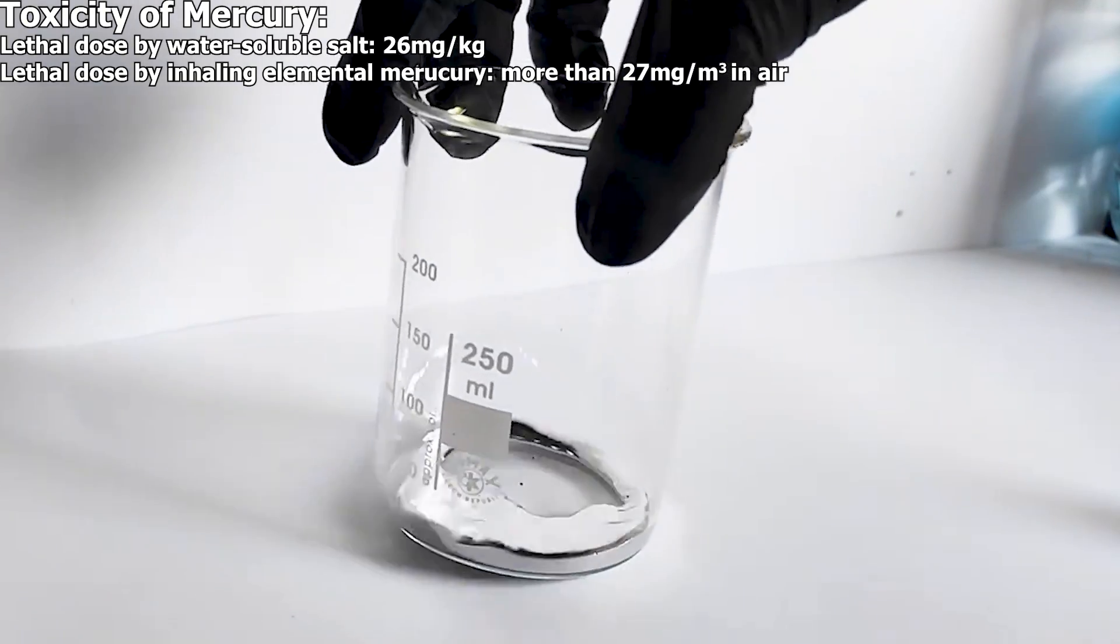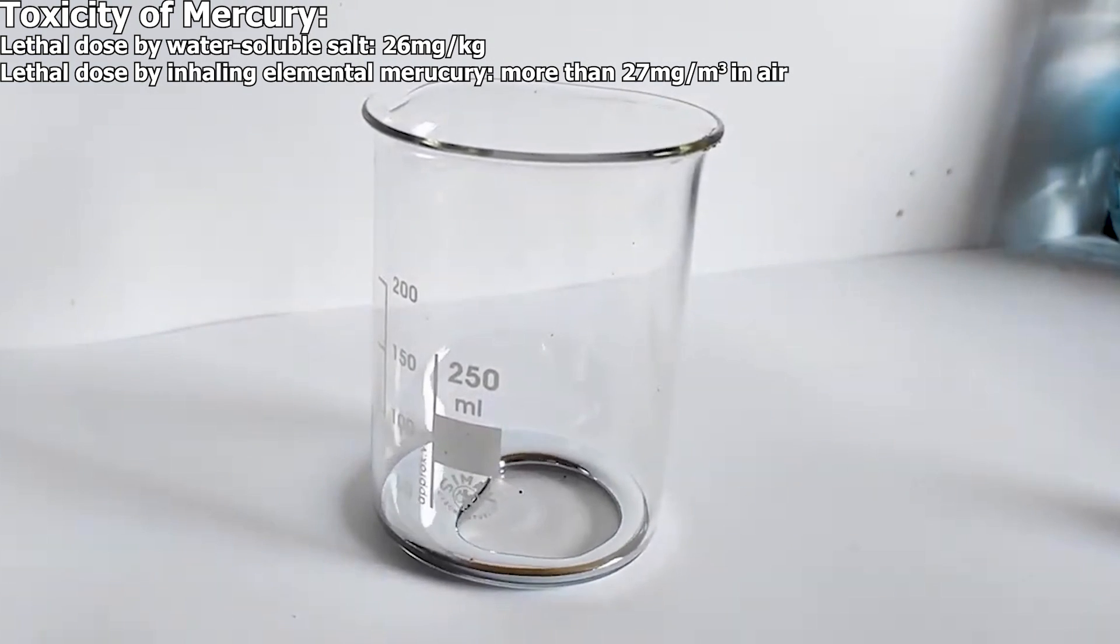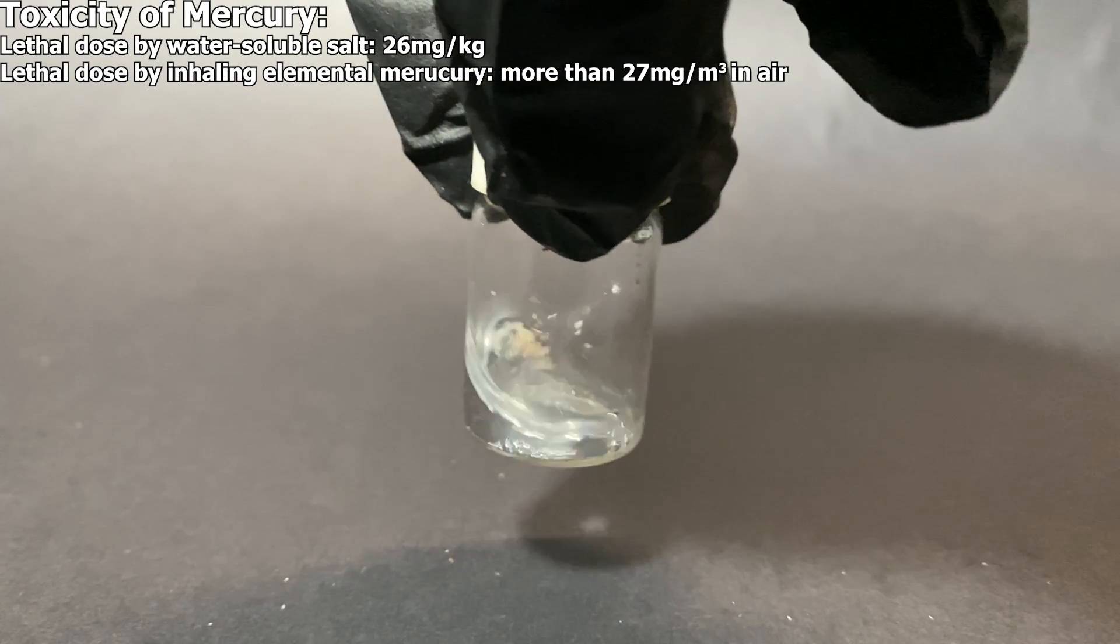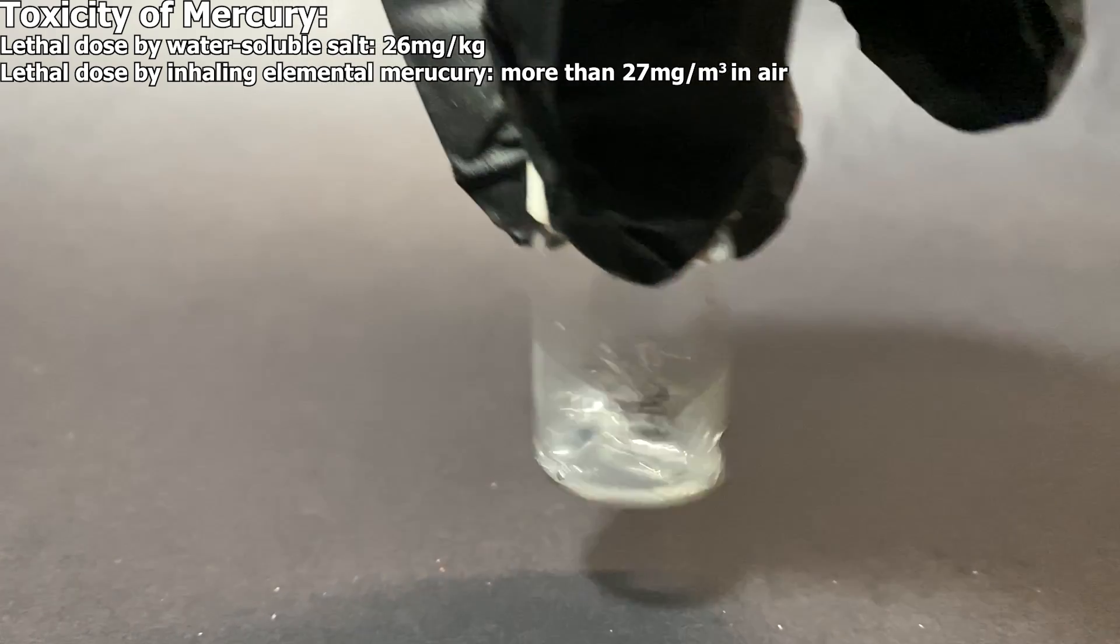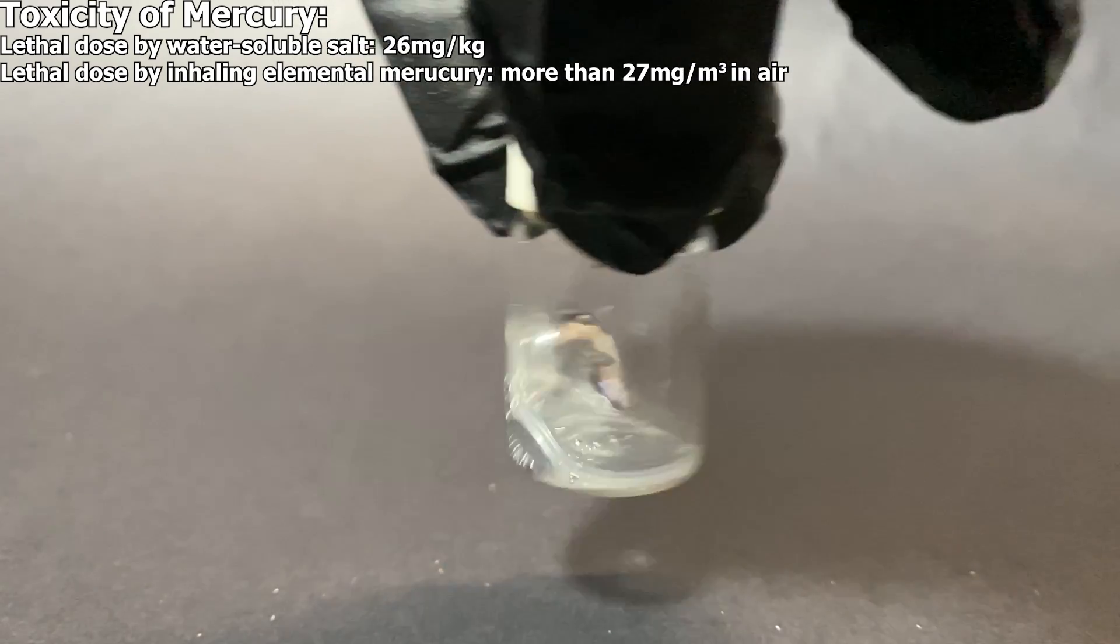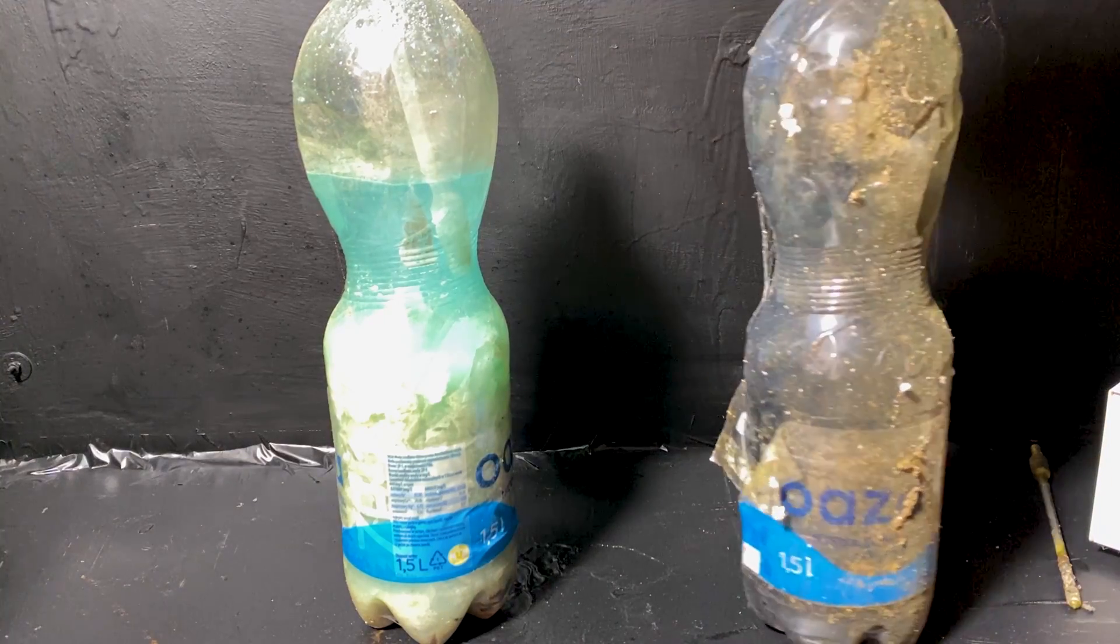Mercury is extremely toxic. In fact, on the screen you should be seeing the average lethal dose for mercury and its salts. And thus it can't be poured down the drain or dumped into the environment, because first that's illegal and second you can directly poison many people. So I store the mercury waste in these two plastic bottles.